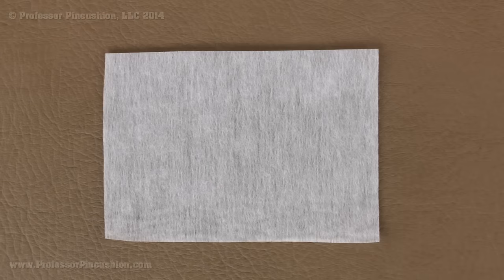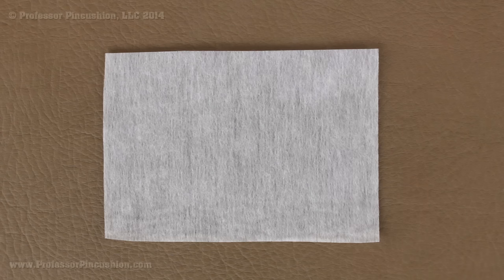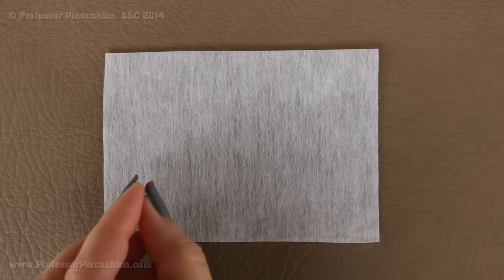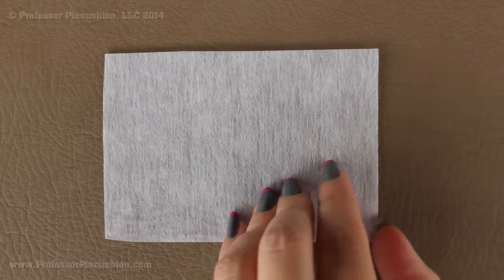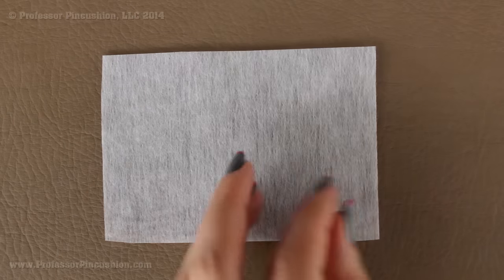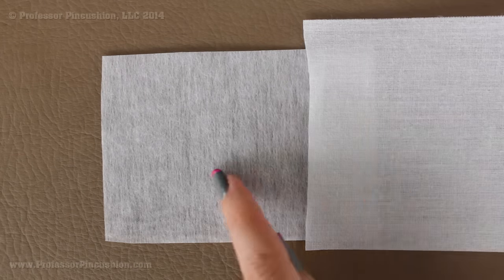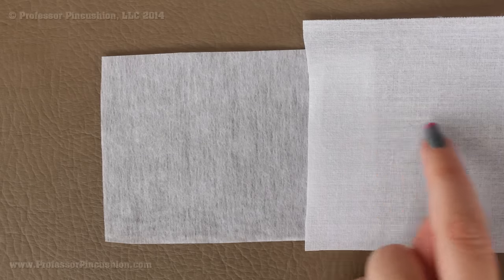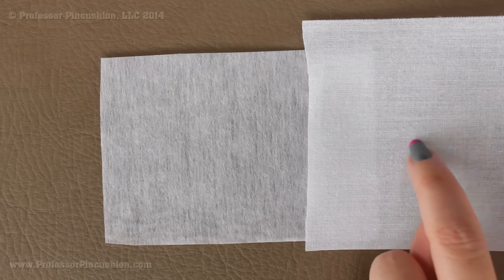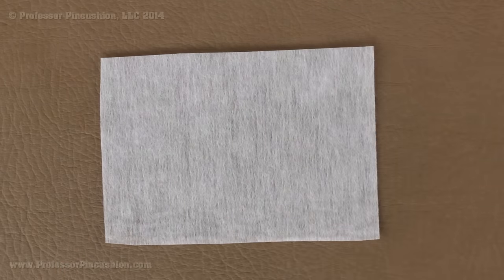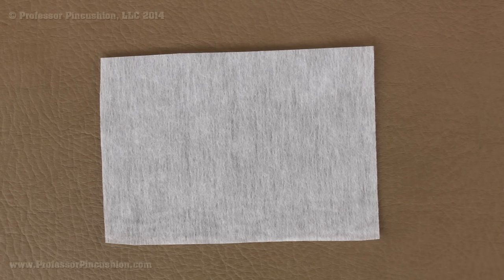Here's an example of non-woven interfacing and this one is actually fairly common. What it is is fibers that are just bonded together in order to create this material. But if I was just to bring in this example again of the woven, you can definitely see a difference. So this actually you can see the threads, we have the grain line. This is just the fibers that are stuck together. There is no grain line to it.